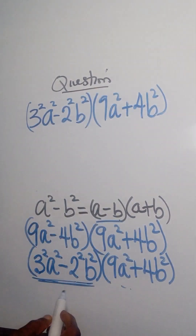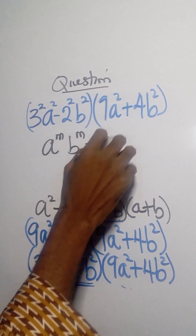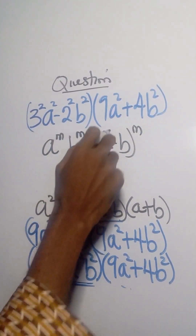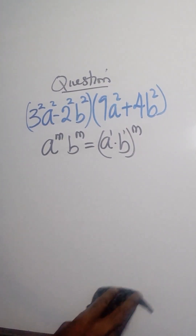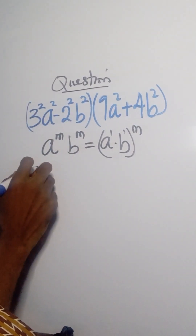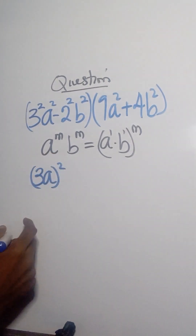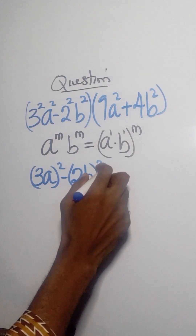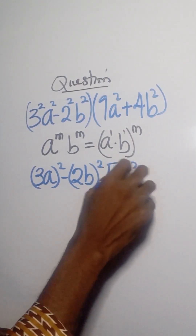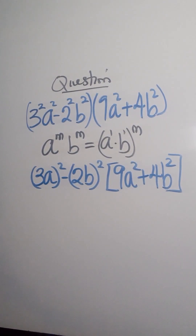We can still apply the same principle — we can factor out the index because the powers are common. So 2 is common, and we can see that this becomes 3a. 2 is common, so we have minus 2b. We still bring down the other part: 9a squared plus 4b squared.